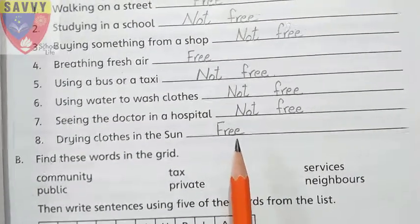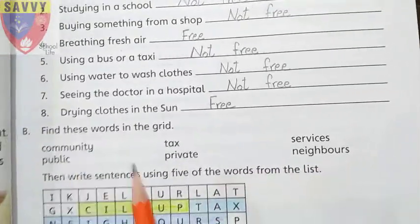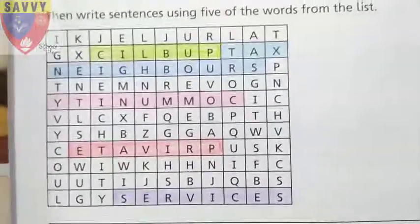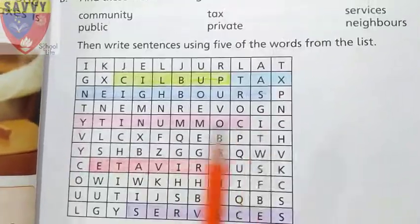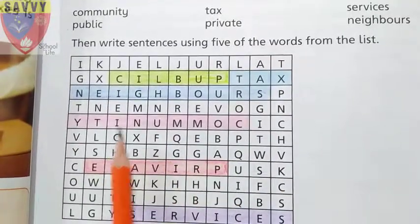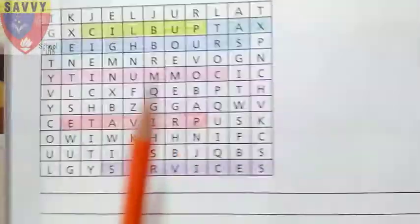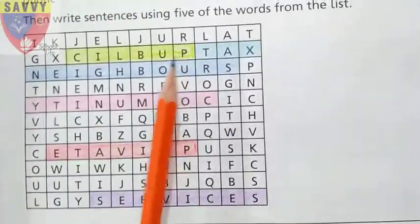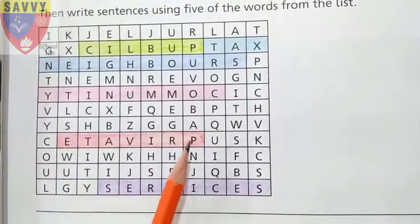Now vocabulary spellings. Community — C-O-M-M-U-N-I-T-Y — community. Tax. Services — S-E-R-V-I-C-E-S. Public — P-U-B-L-I-C. Private — P-R-I-V-A-T-E. Neighbors — N-E-I-G-H-B-O-U-R-S.